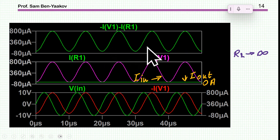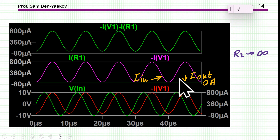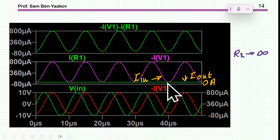If I remove the load so the output is open circuit, then at the input we see inductive behavior — the current is lagging behind the voltage because we now see an inductor. The output current is zero, the input current is the magnetization current, and this is the difference between the two.